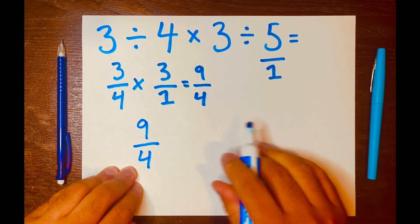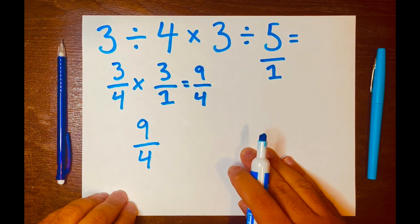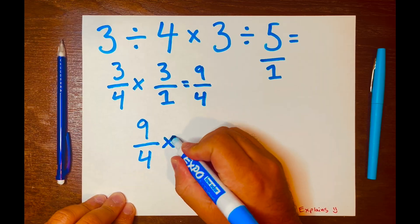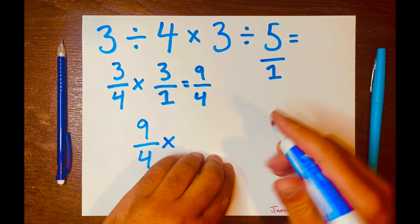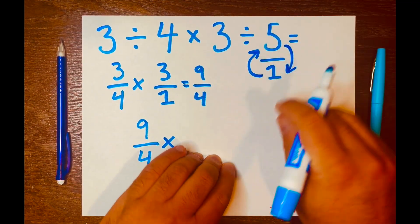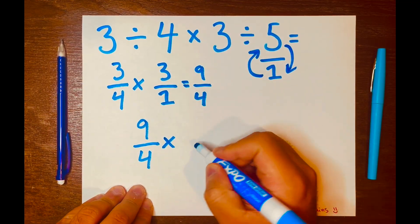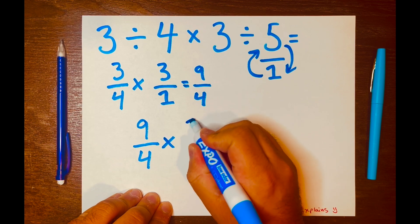Now we have that division symbol. We're going to turn that into a multiplication symbol, and then we want to flip this fraction here. The one will go on top of the fraction and the five will go at the bottom of the fraction. So we're using that keep-change-flip method.